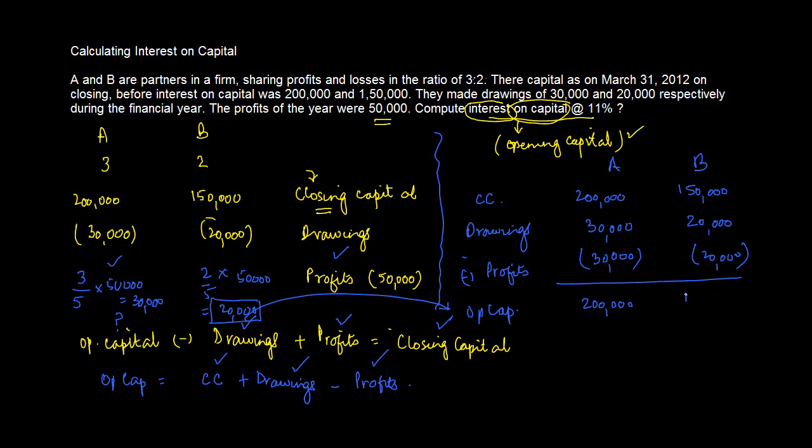Interest on capital is to be allowed at 11 percent, so interest on capital will be what? 11 percent of this amount or 11 upon 100 into 200,000, 11 upon 100 into 150,000. So this will be 22,000, this will be 16,500.